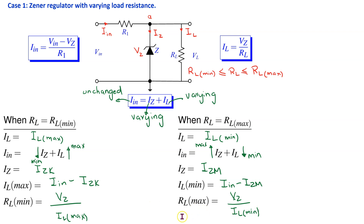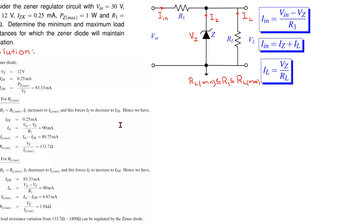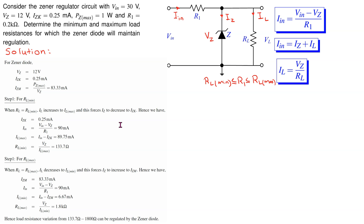This allows us to work out the minimum and maximum values of load resistance. A slide shows a solution to a numerical problem for finding the minimum and maximum load resistances for a Zener regulator circuit. Please pause the video if you wish to study this solution in more detail.